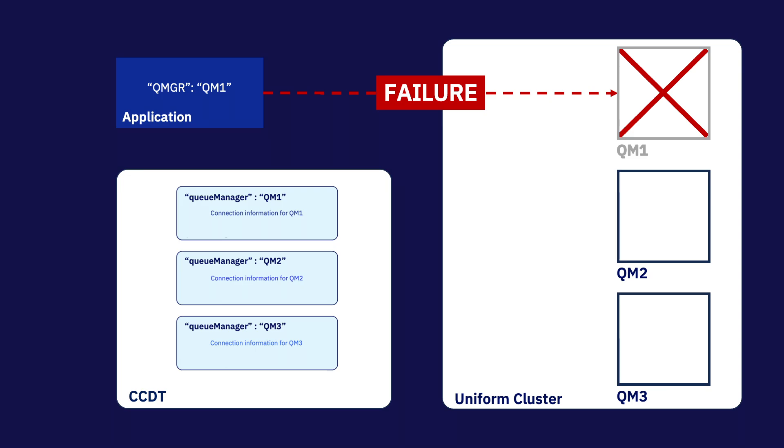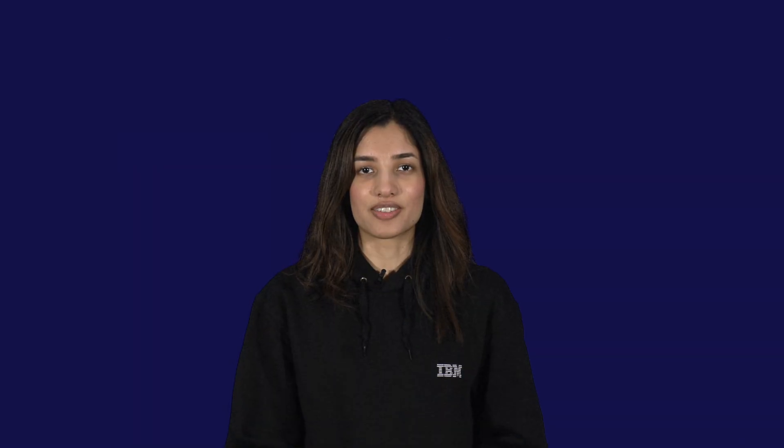So we need a way for applications to connect to uniform clusters independent of any particular queue manager. This is where the concept of connection lists comes in. We need to define a single channel definition which contains the connection information for all of the queue managers in a uniform cluster. The application then simply needs to specify that it wants to connect to this list, which will ensure that it connects to any available queue manager in that uniform cluster.